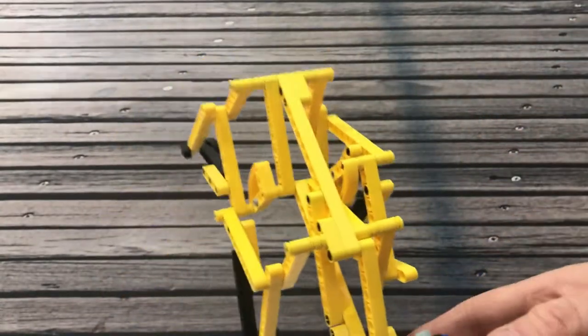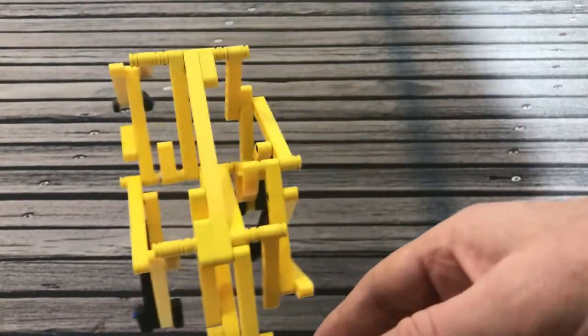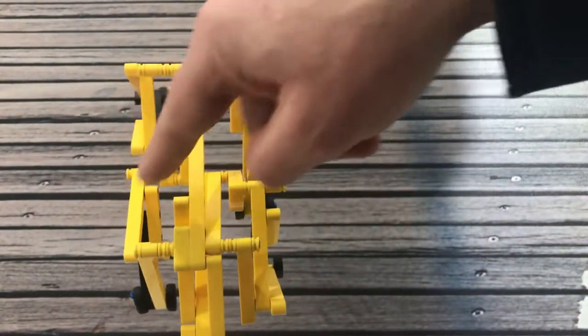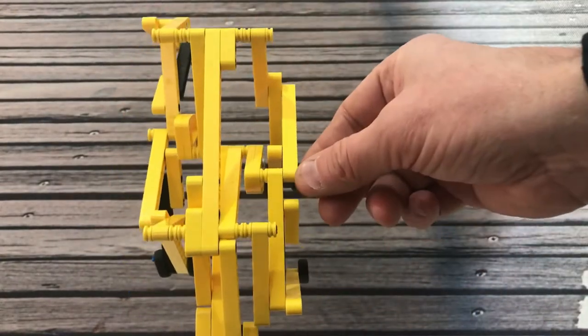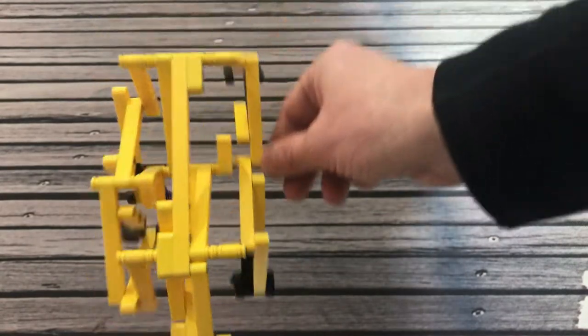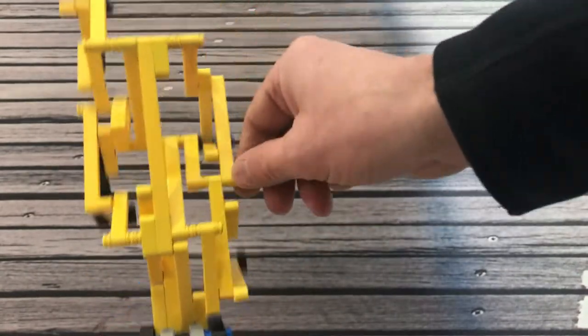Another really important thing when building walkers is to make sure that your spacing between your leg parts is just right so that the parts don't collide with each other and cause jamming.